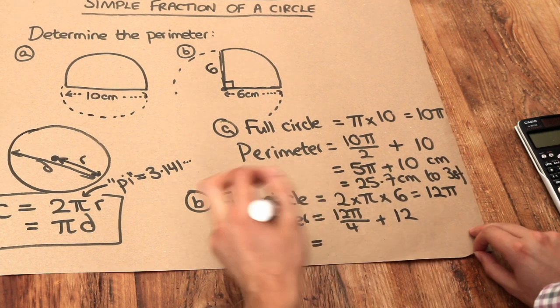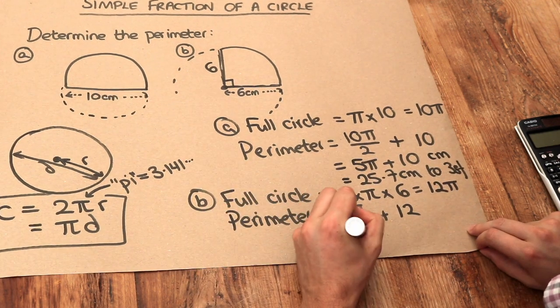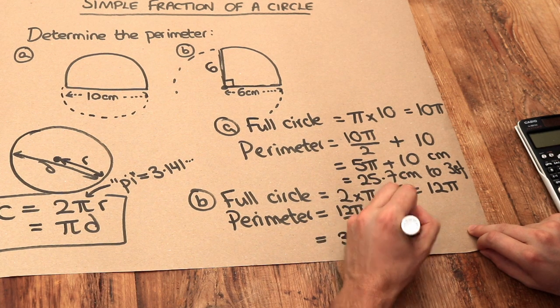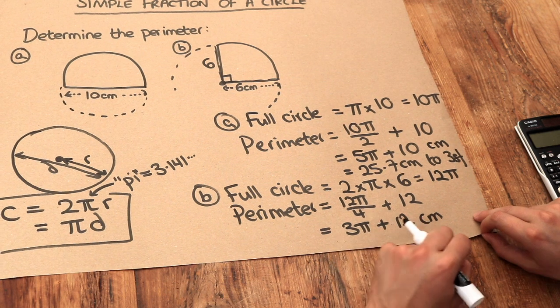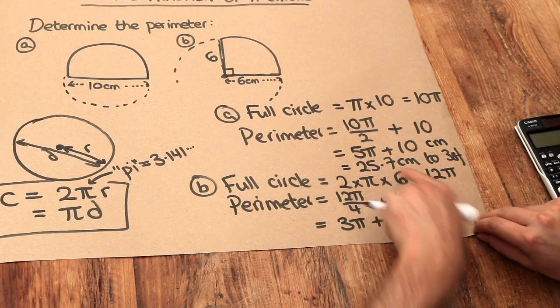12 lots of pi divided by 4 is 3 pi. And add 12. And that's going to be in centimetres. And again, I could shove this into my calculator. And that would give the answer in decimal form just like I had up here.